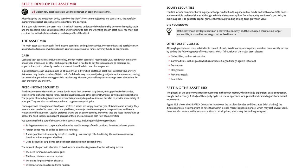Cash levels may temporarily rise greatly above these amounts during certain market periods or during portfolio rebalancing; however, normal long-term strategic asset allocations for cash are within 5% and 10%. Fixed income securities consist of bonds due in more than one year, strip bonds, mortgage-backed securities, fixed income exchange-traded funds, bond mutual funds, and other debt instruments, as well as preferred shares. The purpose of including fixed income products is primarily to produce income, but also to provide some safety of principle, and they are sometimes purchased to generate capital gains.